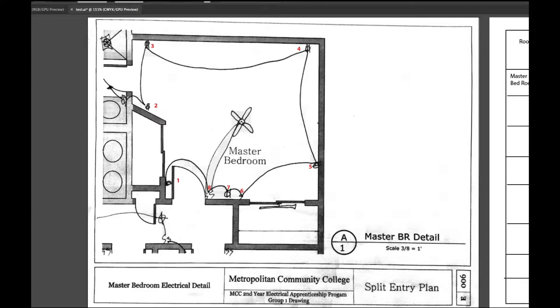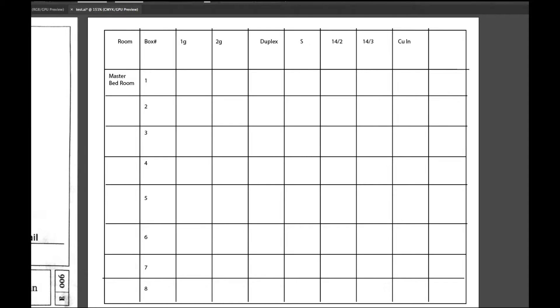So if we go to our little matrix over here, I have box one. I know it's a one gang, and I know it has a duplex, and I know it has one 14.2 in it.